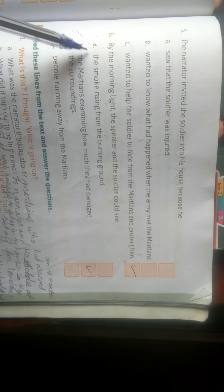Now six, by the morning light, the speaker and the soldier could see: A, the smoke rising from the burning ground; B, the Martians examining how much they had damaged the surroundings; C, people running away from the Martians. The correct answer is B, the Martians examining how much they had damaged the surroundings.